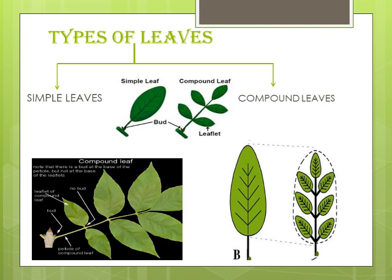The end of the petiole is where we look for the bud. If the bud is present at the base, that means the whole structure — say five or seven leaflets — together forms one leaf. In the black diagram shown, there are seven leaflets, and all together they form one leaf. The simple leaf is one big undivided lamina, while in a compound leaf all the small parts together form one leaf.